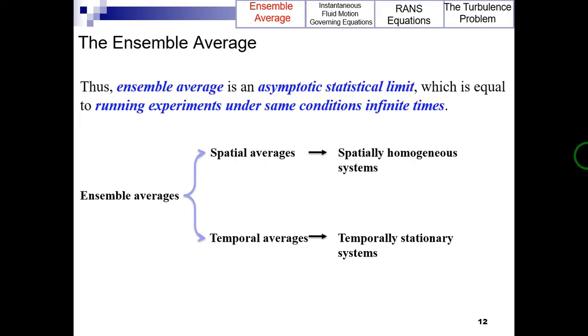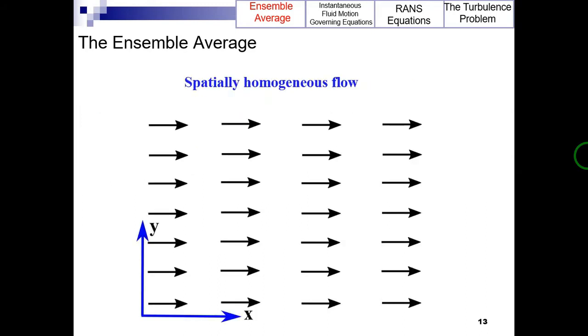The following figure shows an example of a spatially homogeneous flow. As can be inferred, the values of velocity gradients in the horizontal and vertical directions are zero. In other words, a flow is said to be homogeneous if there are no spatial gradients in any average quantities.